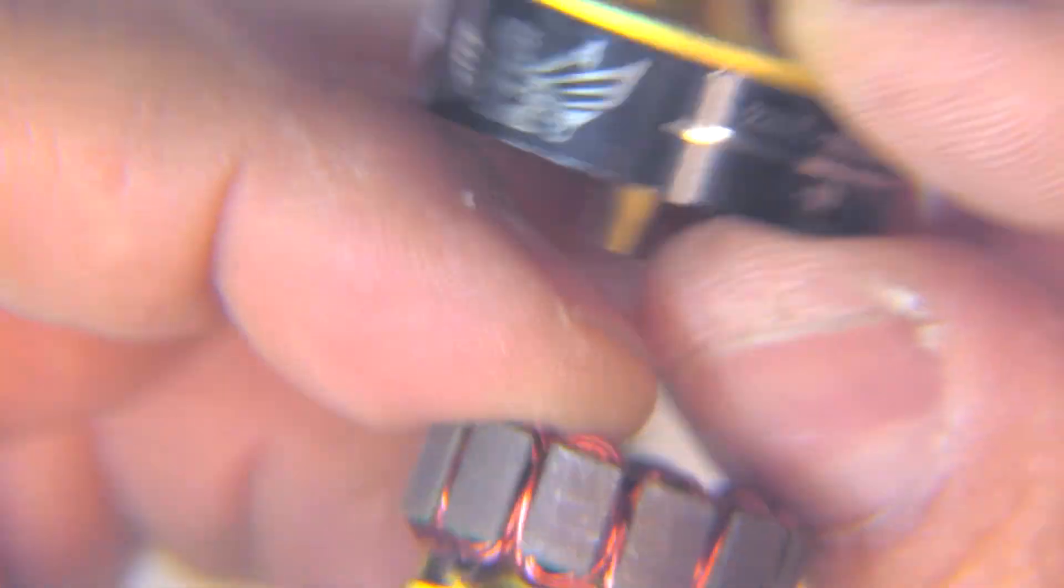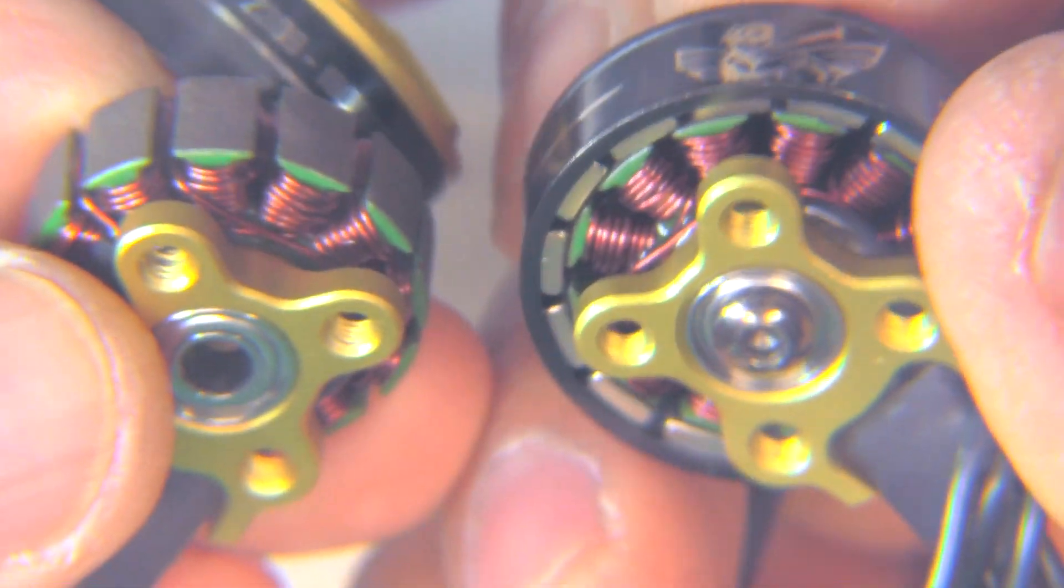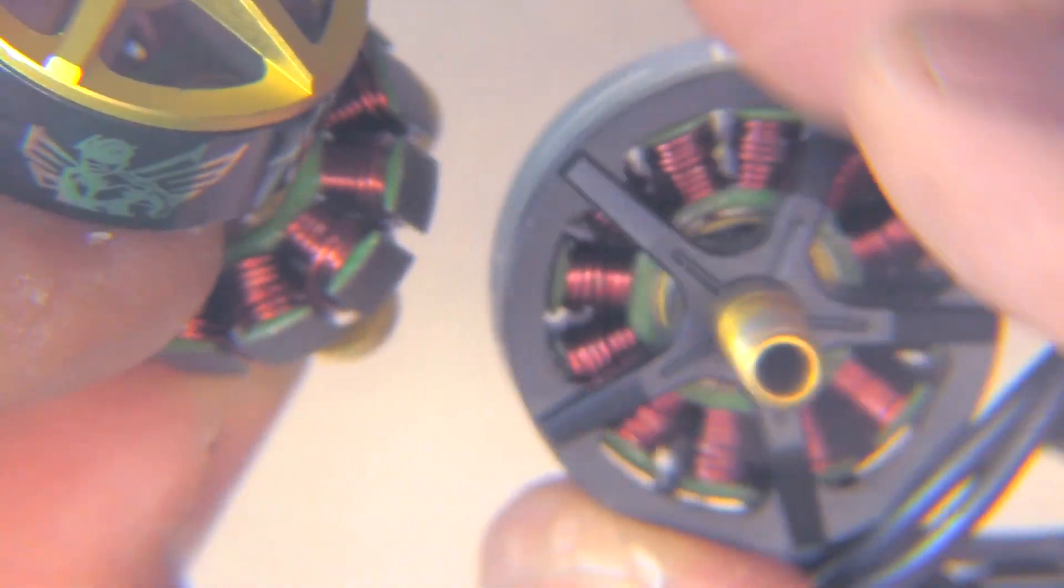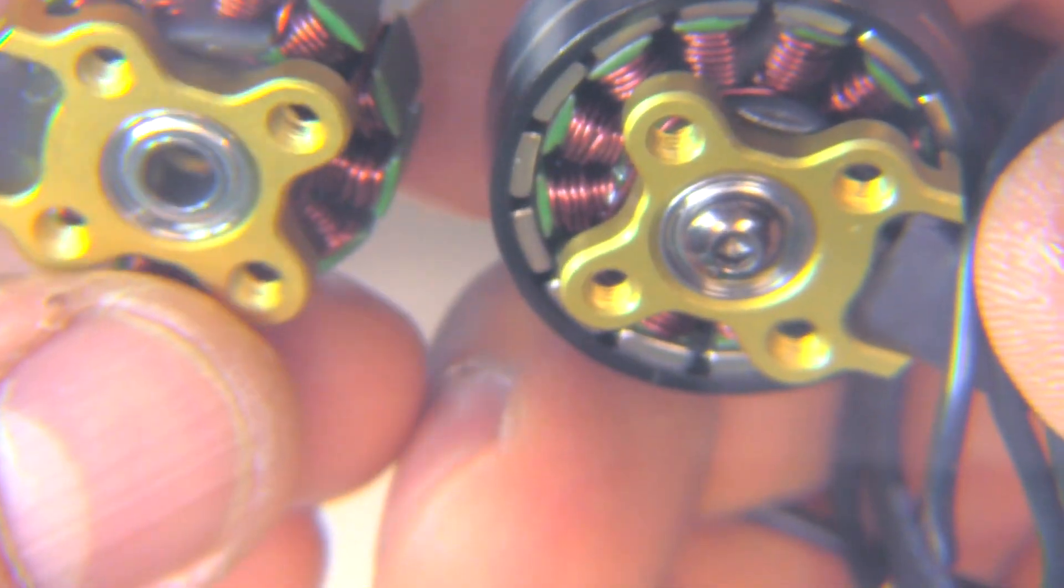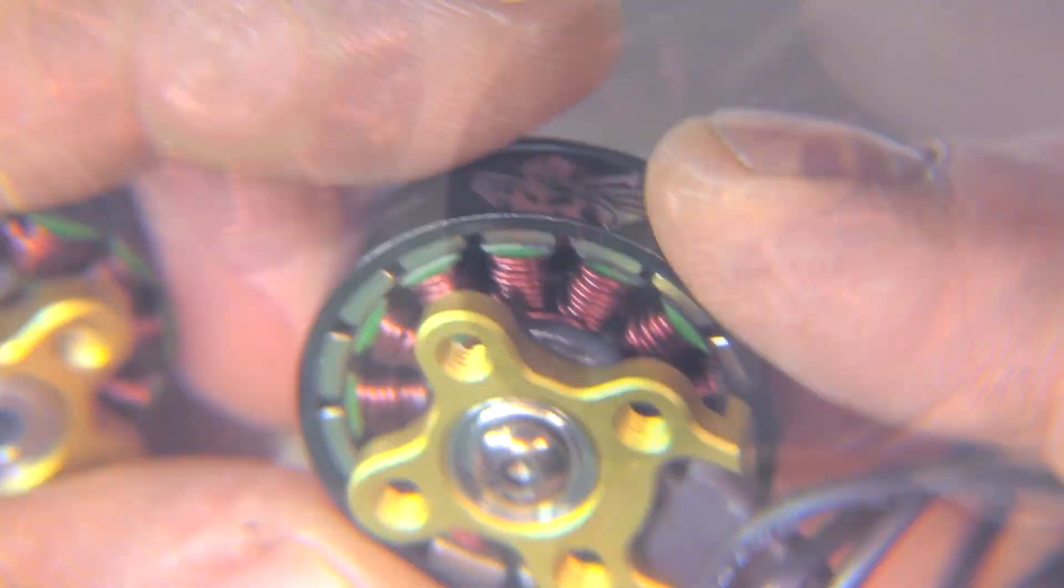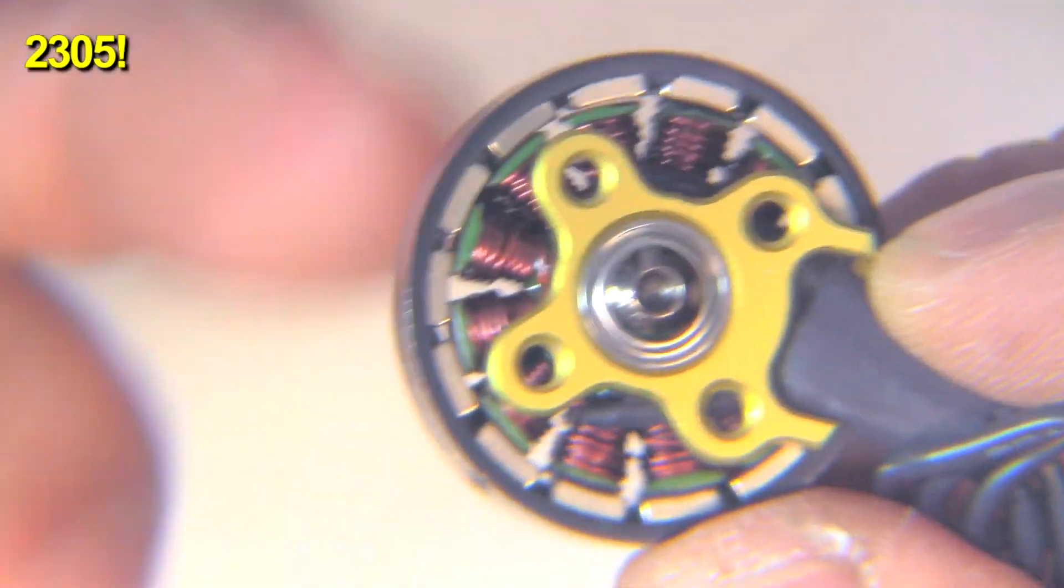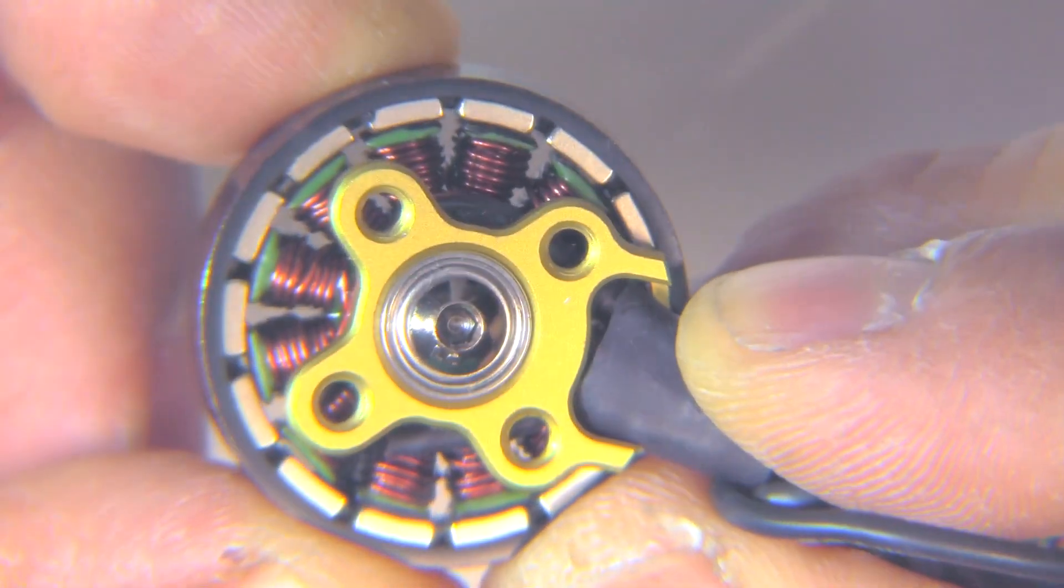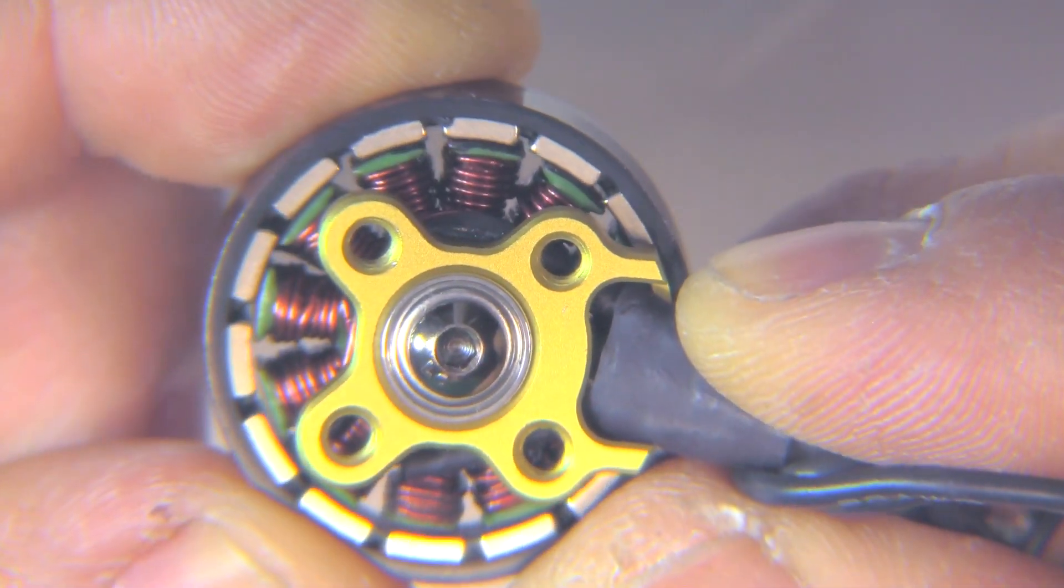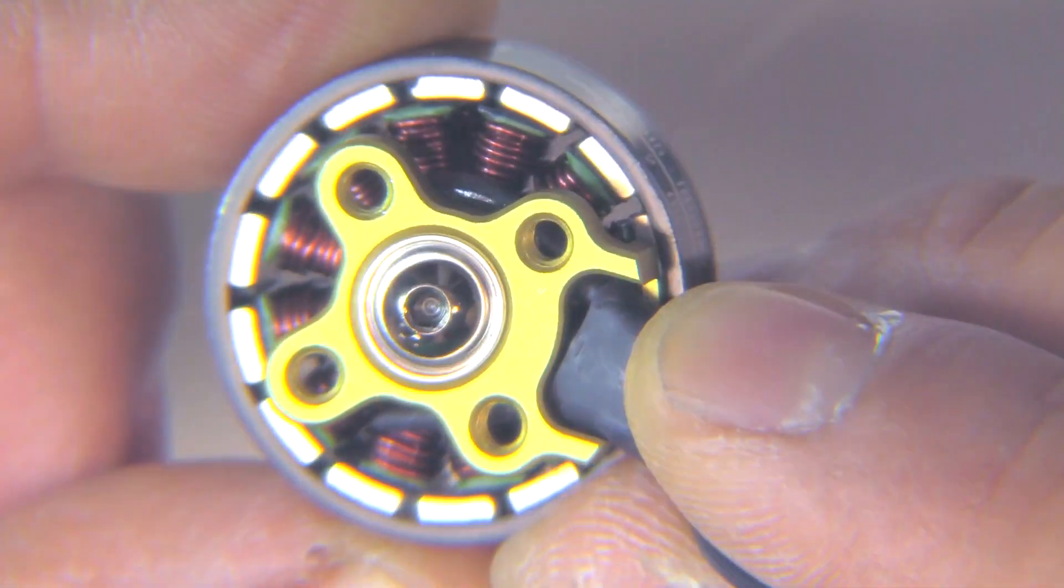That's the breakdown of the motor. I'm not going to break down the 2305 because it looks like it's pretty much the same construction. As you can see they're quite similar. The only difference is the stator height, which is 5 millimeters. Everything else looks the same. A pretty good air gap, not overly tight and not loose either. That should make for good performance on these motors.